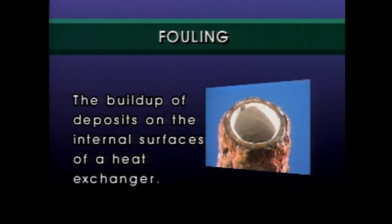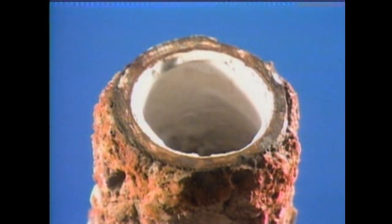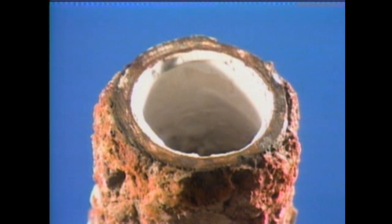Fouling is a term that's often used to describe the buildup of deposits on the internal surfaces of the heat exchanger. When fouling occurs, the result is an additional layer of material that heat must pass through. This additional layer reduces the ability of the unit to transfer heat. Also, if the buildup becomes excessive, the flow of fluids through the unit may be restricted.